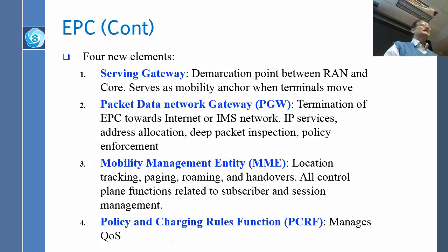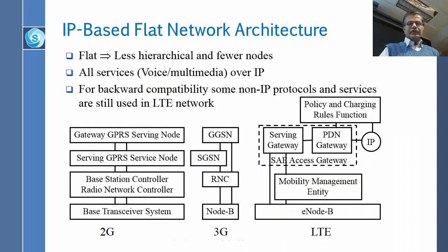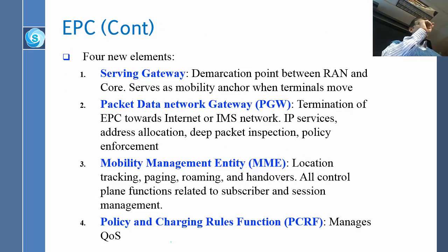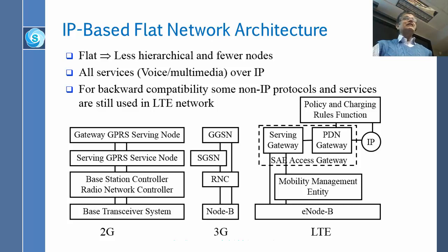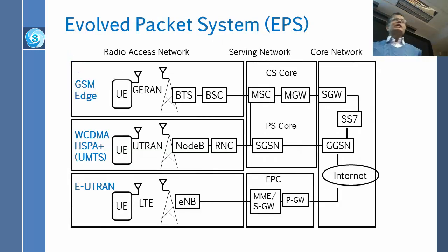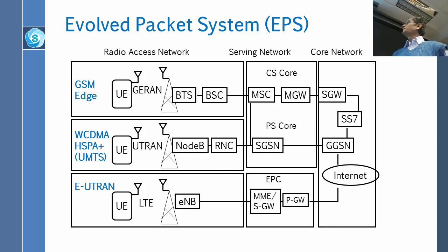The fourth function is policy and charging, which is very important in the phone business. So LTE has added these four functional boxes — SGW, PGW, MME, and policy and charging — but the previous boxes such as SGSN and GGSN have not gone away, because every LTE system still has 2G, 3G, and 4G. So making LTE IP-based does not really reduce anything, because everything old is still there — the system is actually becoming even more complicated.